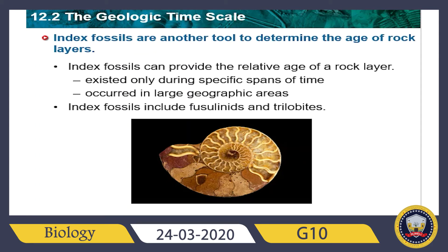The presence of this marine invertebrate, the fusulinid, indicates that a rock layer must be between 251 million and about 359 million years old. Fusulinids are useful for dating fossils of other organisms in a layer because the presence of both organisms in one layer shows that they lived during the same time period.